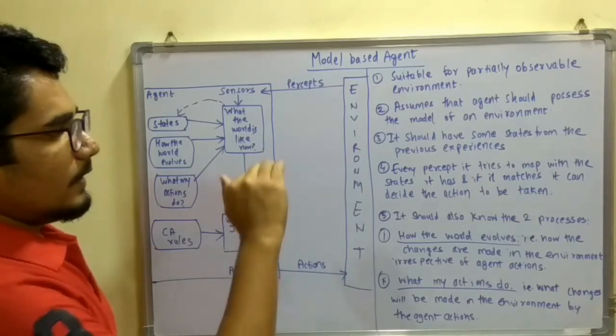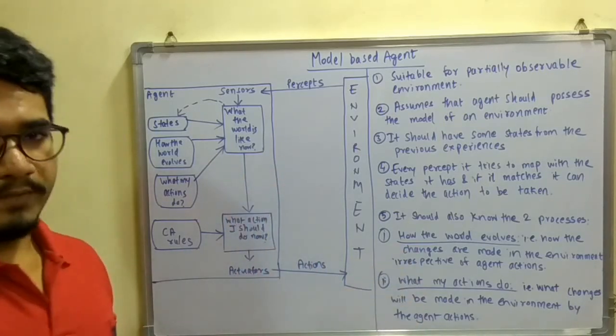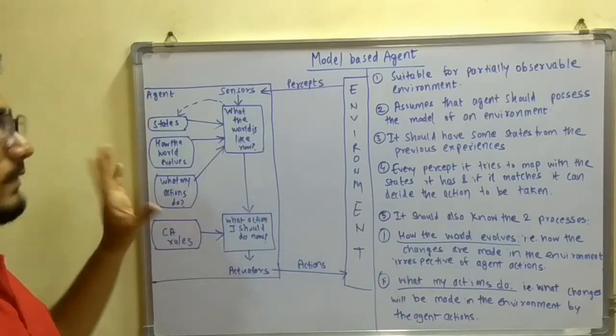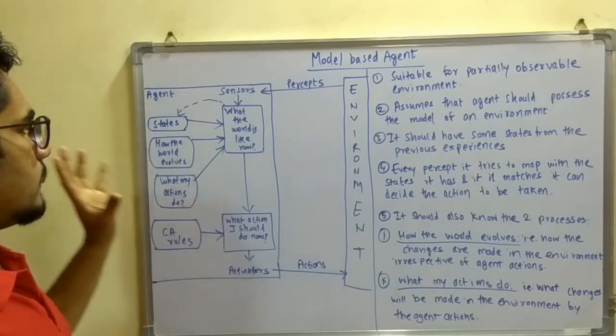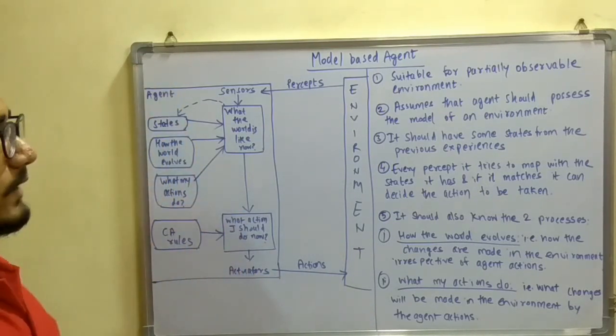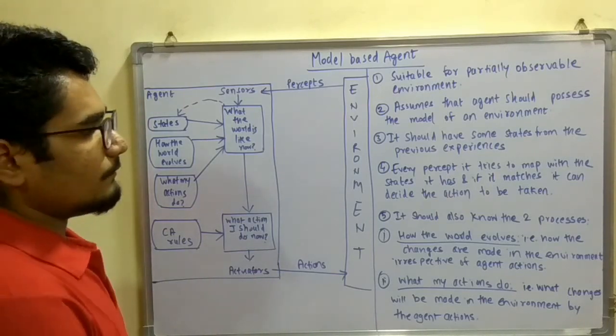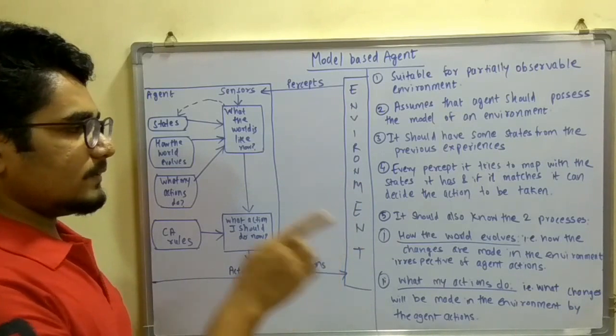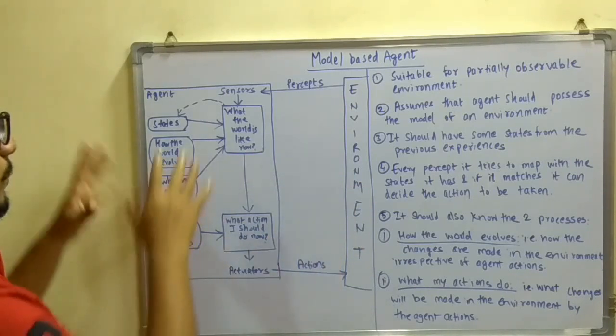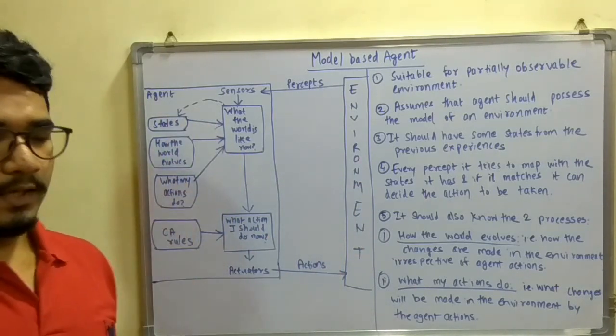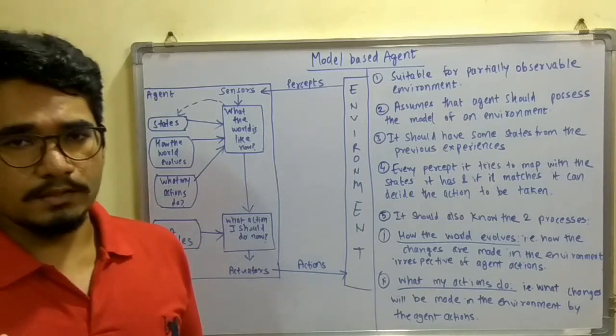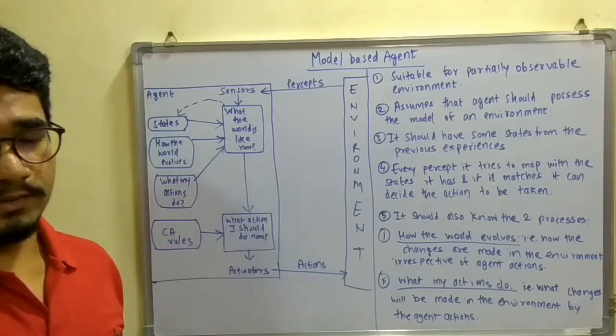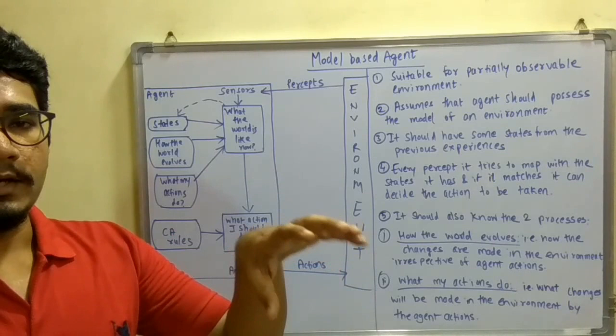The states store some previous experiences knowledge which it has to currently drive into the action being executed. Every perception tries to map with the states, and if it matches with the desired action to be taken now. If any current action is to be taken, like if there is a hot environment or hot iron and the agent is trying to grab that, then it should sense it from the previous experience.